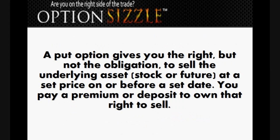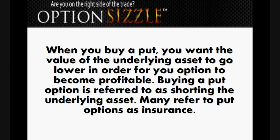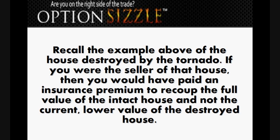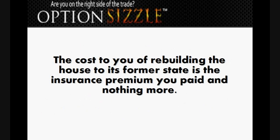A put option gives you the right, but not the obligation, to sell the underlying asset at a set price on or before a set date. You pay a premium or deposit to own that right to sell. When you buy a put, you want the value of the underlying asset to go lower in order for your option to become profitable. Buying a put option is referred to as shorting the underlying asset. Many refer to put options as insurance. If you were the seller of that house and had paid an insurance premium, you could recoup the full value of the intact house rather than the lower value of the destroyed house — the insurance premium you paid is your only cost.